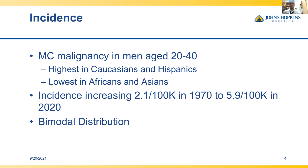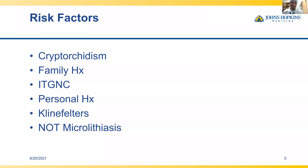There is a bimodal distribution of testis cancer from young teens and early adults to midlife. Common risk factors are cryptorchidism, positive family history, intratubular germ cell neoplasia, personal history of testis cancer, and Klinefelter's. However, microlithiasis — something still flagged by radiology colleagues — does not increase the risk for testis cancer, so ultrasounds showing significant microlithiasis do not routinely need periodic follow-up.